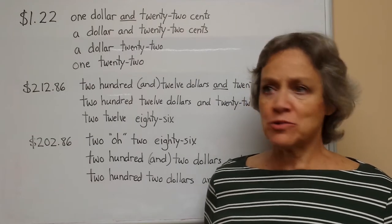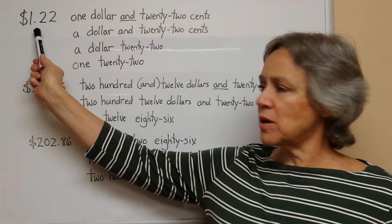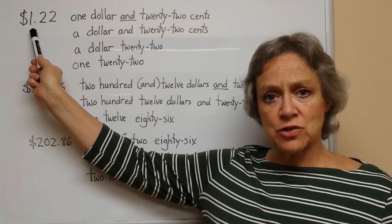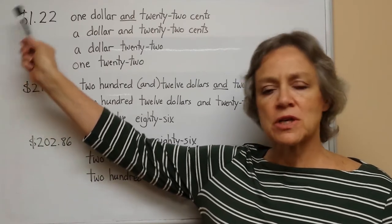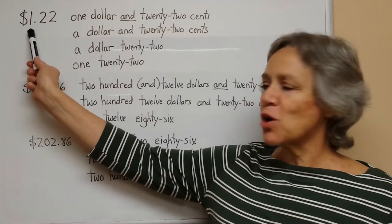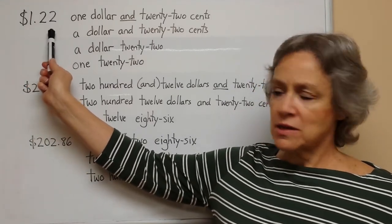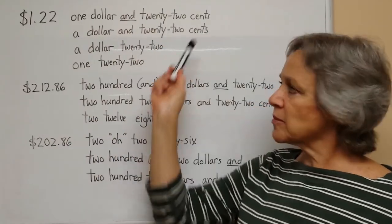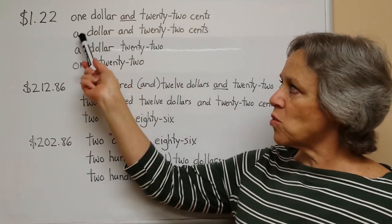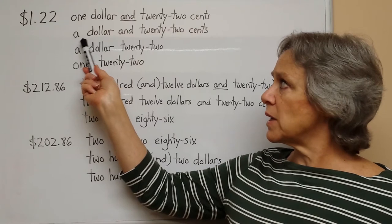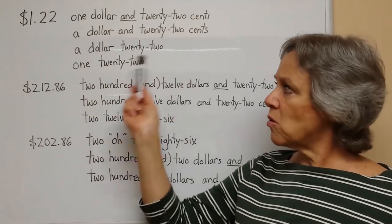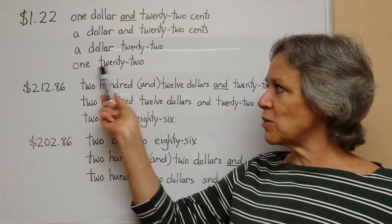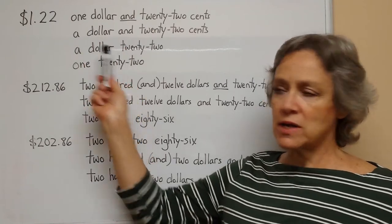When we write money amounts, we write the dollar sign first and then the number of dollars second. But when we say money amounts, we say the number of dollars first and then the word dollar or dollars after that first number. So this is one dollar and twenty-two cents — we say the word 'and' for the decimal point. For the word one, we often say the word 'a', so this would be 'a dollar and twenty-two cents.' Or we could just say 'a dollar and twenty-two' without saying the word cents. We could also just say 'one twenty-two.' So these are just different ways of saying this number.